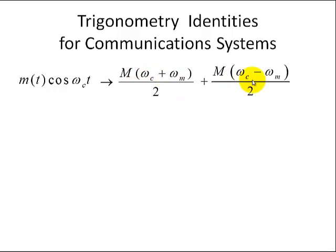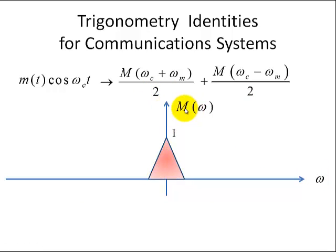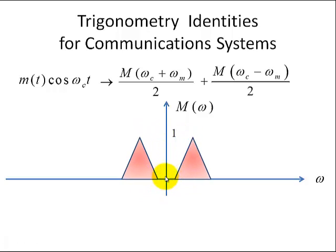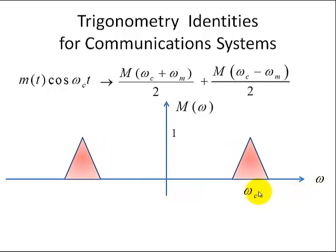The information is now centered at the carrier frequency. So let's say the horizontal axis is omega and the vertical axis is M of omega — you can think of this as the Fourier transform of our message signal, which I'll define more carefully in later videos. What this operation of multiplying the two signals together does is basically shift the information centered at the origin and move or split that information to be centered at omega C and at negative omega C. The reason we have negative omega C is that in the Fourier transform description, it involves complex exponentials, so that's why you have positive and negative frequency.